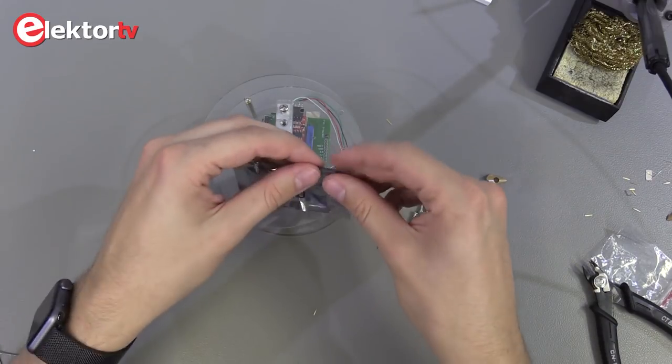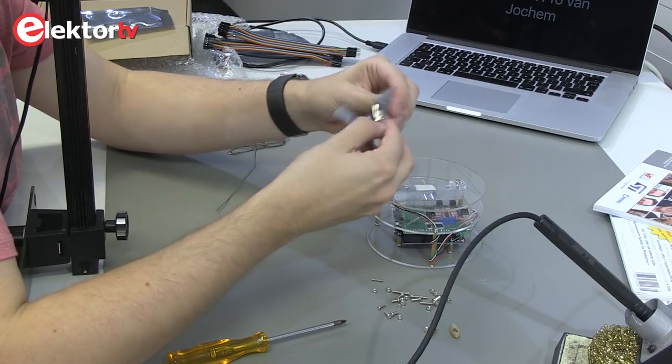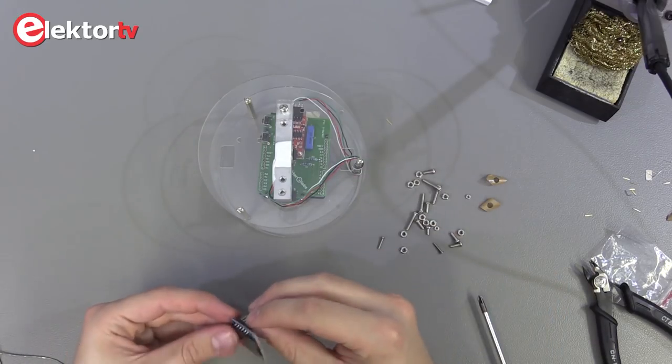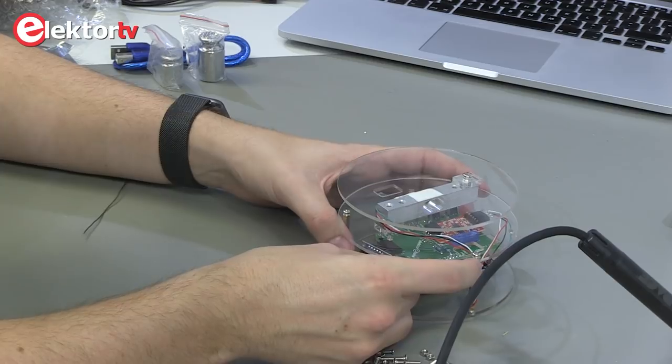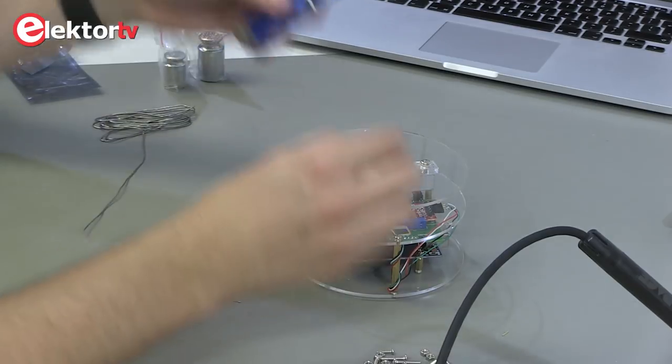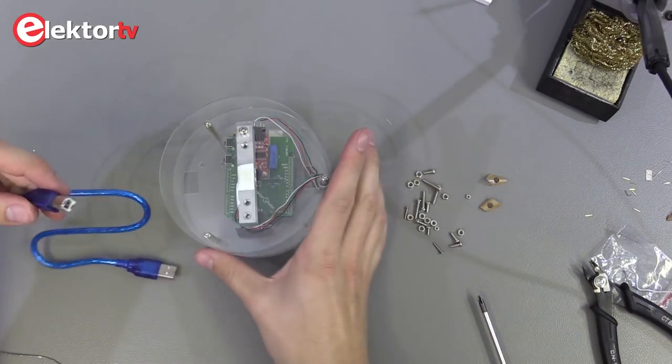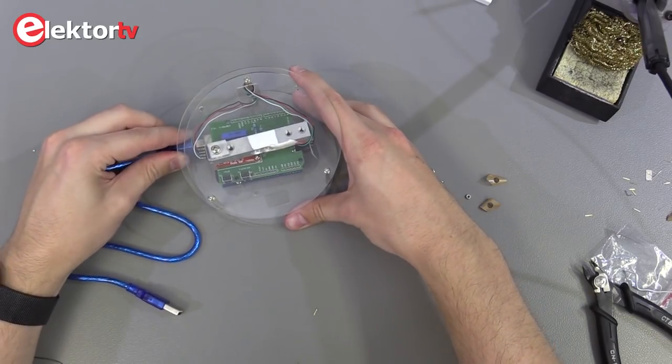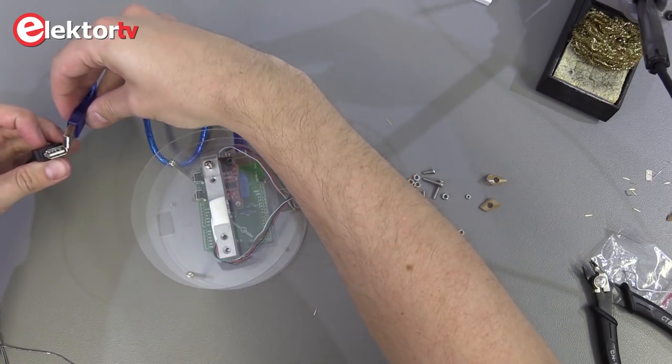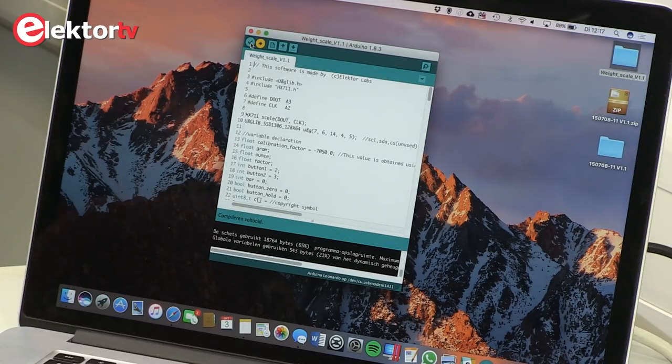Now we can add the display to the PCB down here, like so. So far so good. Now connect the USB cable, one side to the Arduino and the other side to the PC.